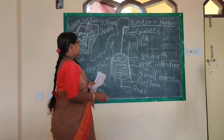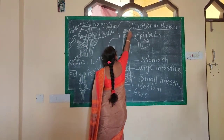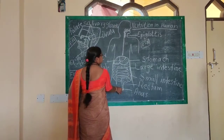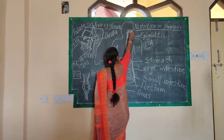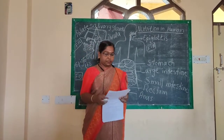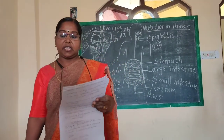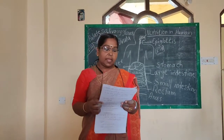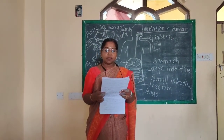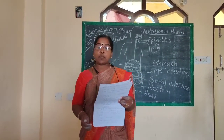The digestive system starts from the mouth to the anus. It is extended from the mouth all the way to the anus. The alimentary canal basically extends from the mouth to the anus. In this class, we can see that the tube has different parts.